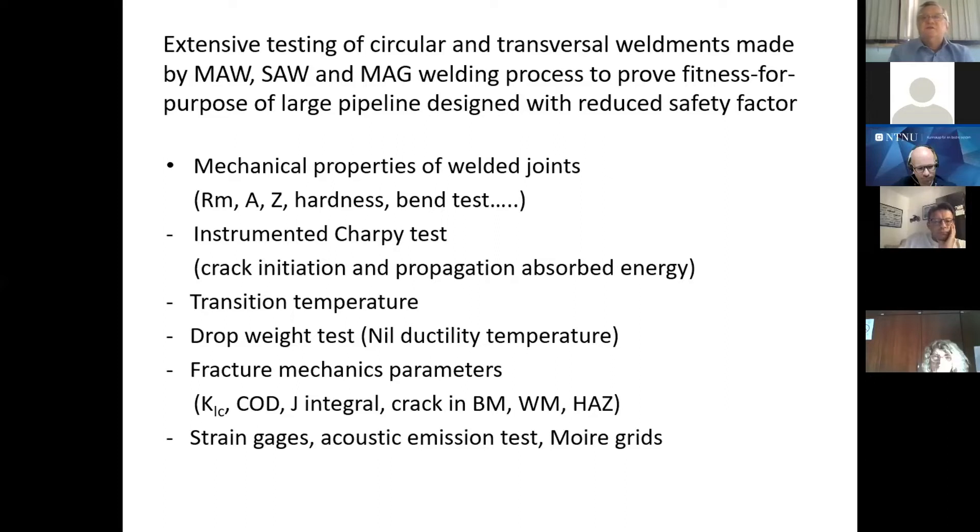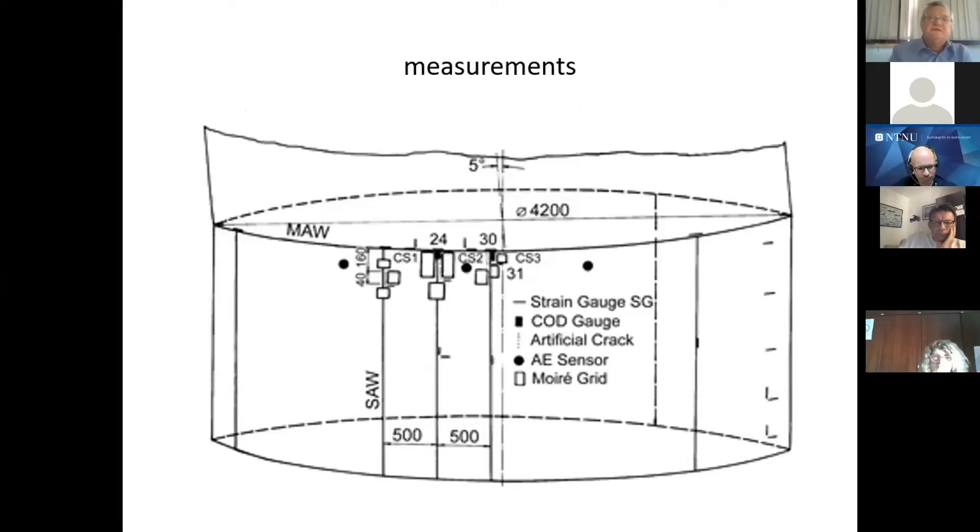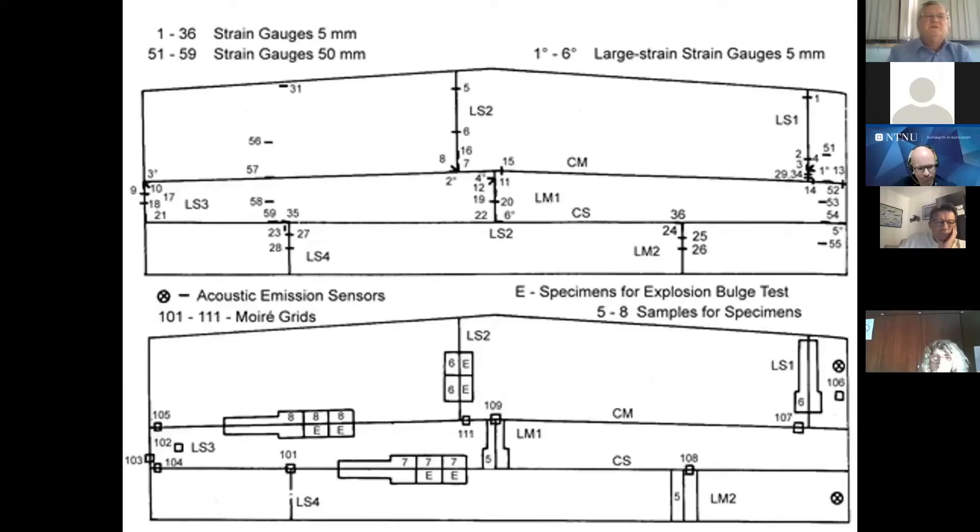And the crack was positioned in all zones of weldment, be it base metal, weld metal, or heat affected zone. We also had instrumentation comprising of strain gauges, crack opening displacement gauge, acoustic emission sensor, and moiré grid. And you can also see here the disposition of these measuring points, and also the disposition of the specimens samples that were taken out to make specimens.